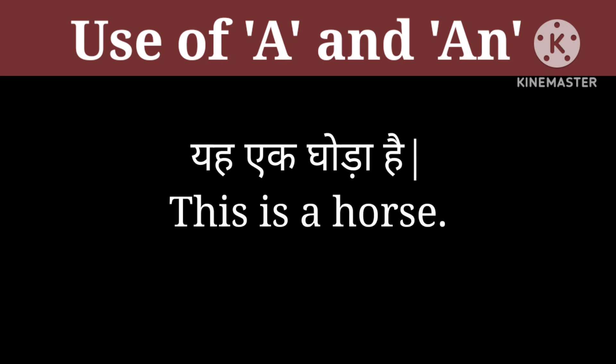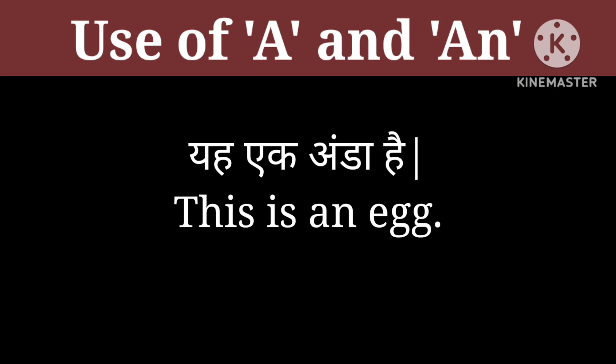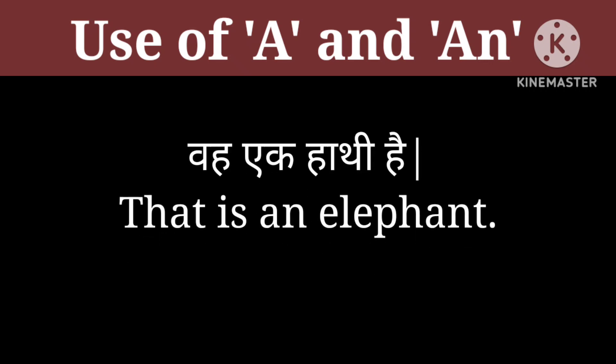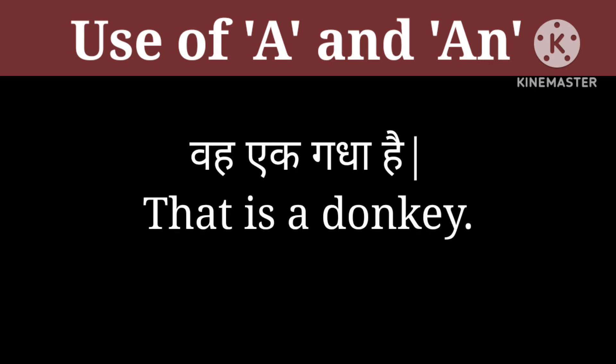Yah ek ghoda hai — This is a horse. Yah ek anda hai — This is an egg. Wah ek hati hai — That is an elephant. Yah ek chata hai — This is an umbrella. Wah ek gadha hai — That is a donkey.